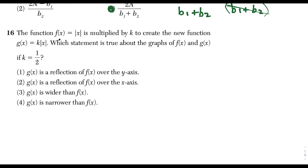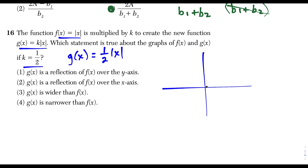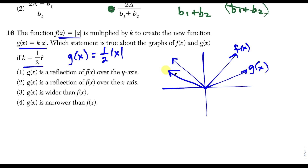Question 16: f of x equals absolute value x, and g of x equals k times absolute value x, with k equals one-half. Substituting, g of x equals one-half times absolute value x. The absolute value graph looks like a V cutting quadrants one and two at 45 degrees. Multiplying by one-half makes the graph wider. So g of x is wider than f of x.